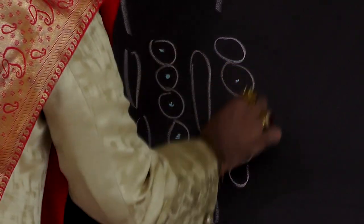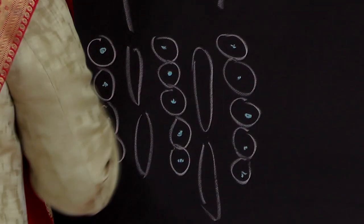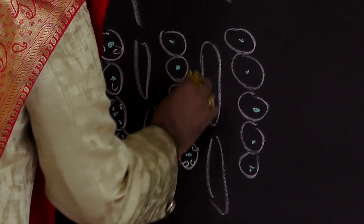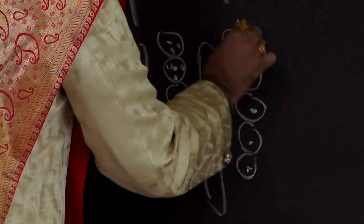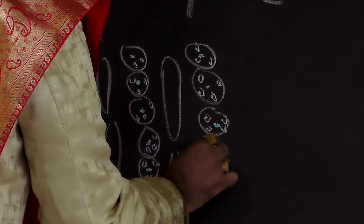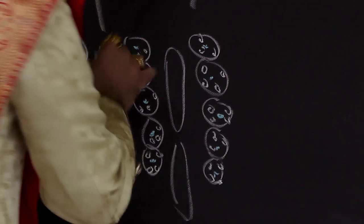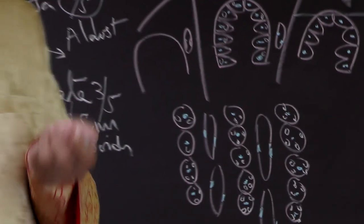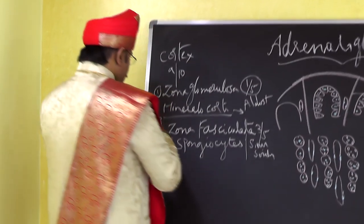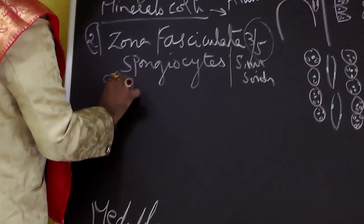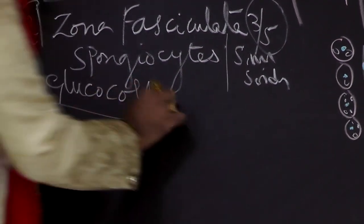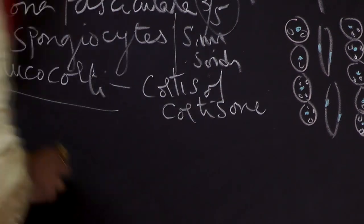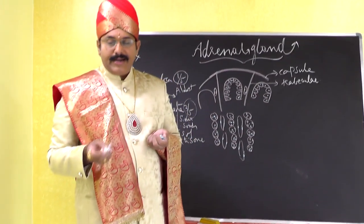The spongiocytes have a nucleus more or less in the center and contain many vacuoles — more than those seen in the columnar cells of zona glomerulosa. The sinusoids are vertically arranged between the spongiocytes. The zona fasciculata produces glucocorticoids, namely cortisol and cortisone, which are responsible for carbohydrate and protein metabolism.